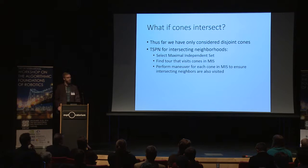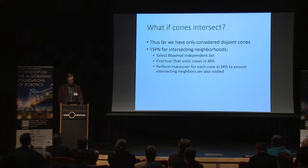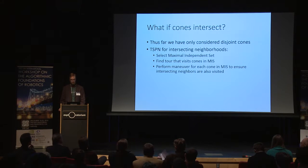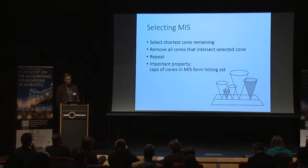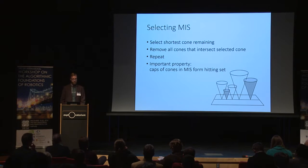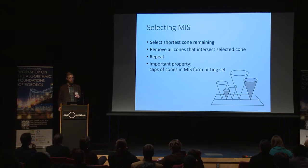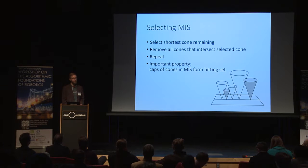Thus far, we've considered only disjoint cones. The standard method in the literature when you have intersecting neighborhoods for TSPN is to select a maximal independent set — a disjoint set of neighborhoods that have the property that they intersect all of the neighborhoods in the input. Then you find a tour that efficiently visits the cones in the MIS, and for each cone in the MIS, you perform a maneuver to ensure that all the intersecting neighborhoods are also visited. Our greedy MIS selection starting from the shortest cone gives us the important property that we only need to visit the caps of the cones.